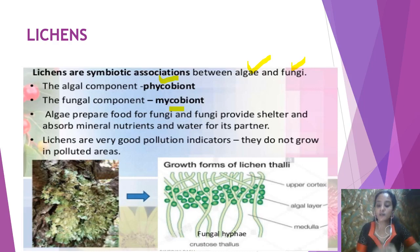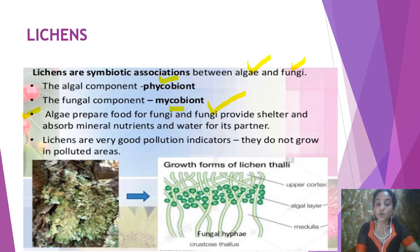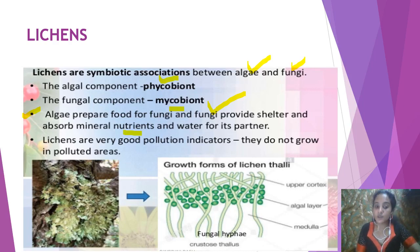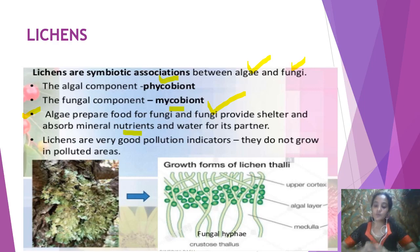What is the symbiotic association? The algae can prepare food for the fungi. In return, the fungi provide shelter and help in the absorption of mineral nutrients and water for the algae. So the algae — the phycobiont — prepare the food, and the fungi — the mycobiont — help in absorption of minerals and water. They are mutually helping each other — one having the phycobiont role and the other the mycobiont role.